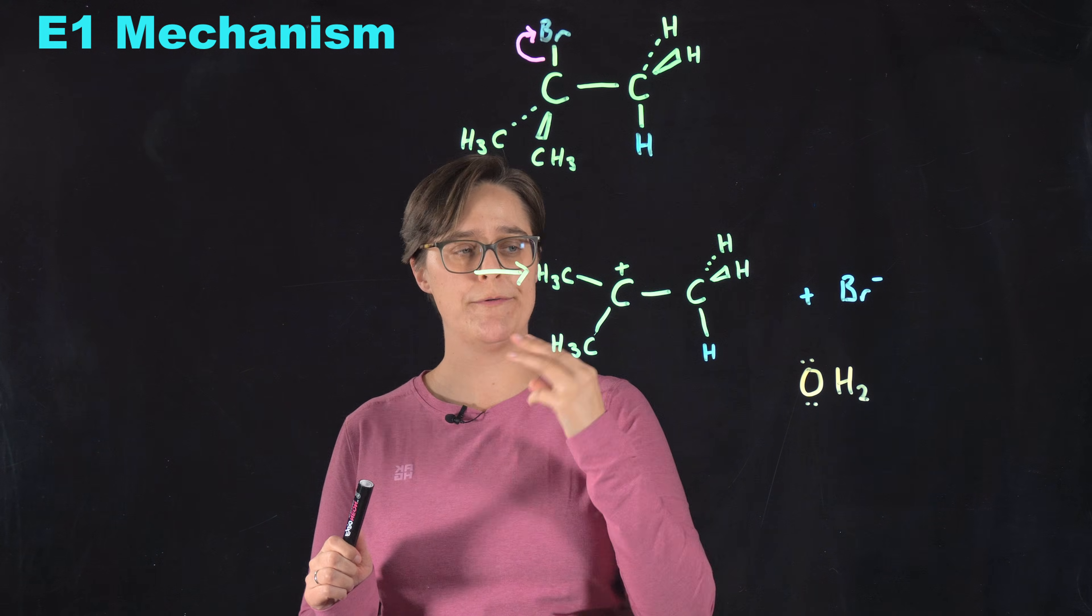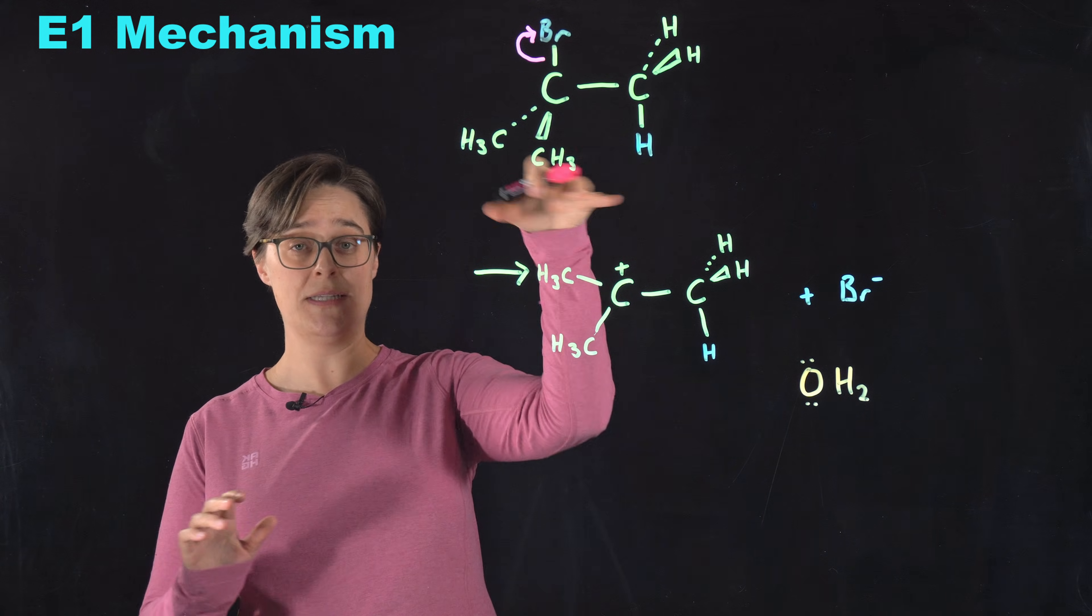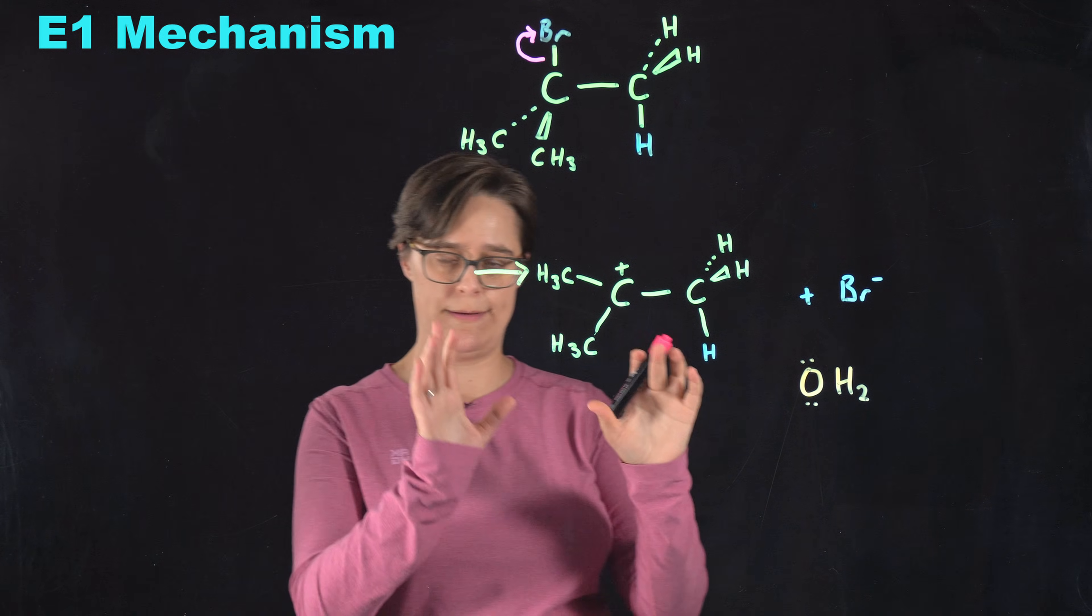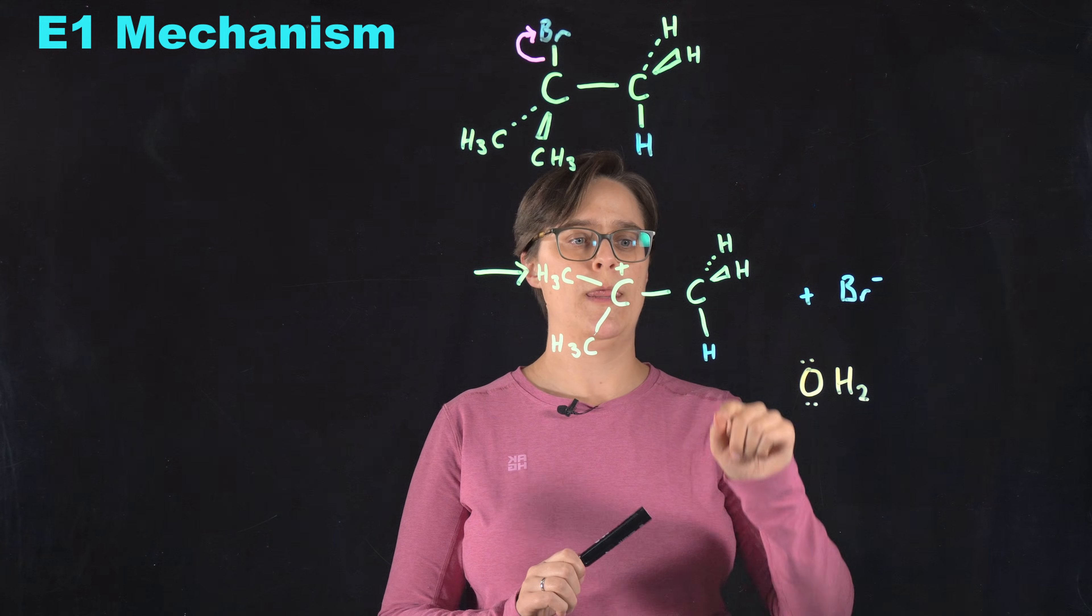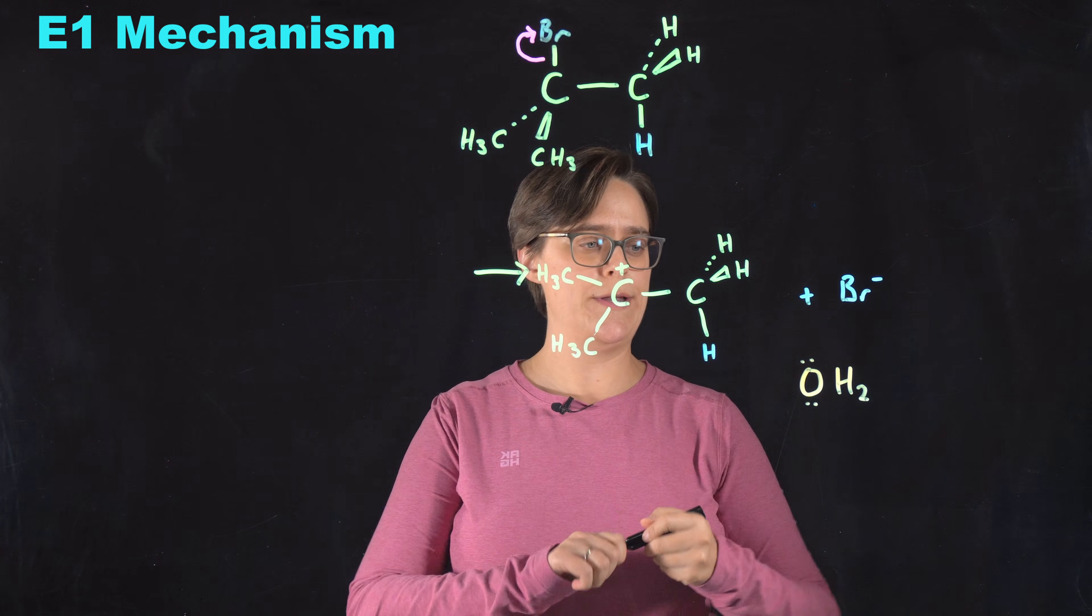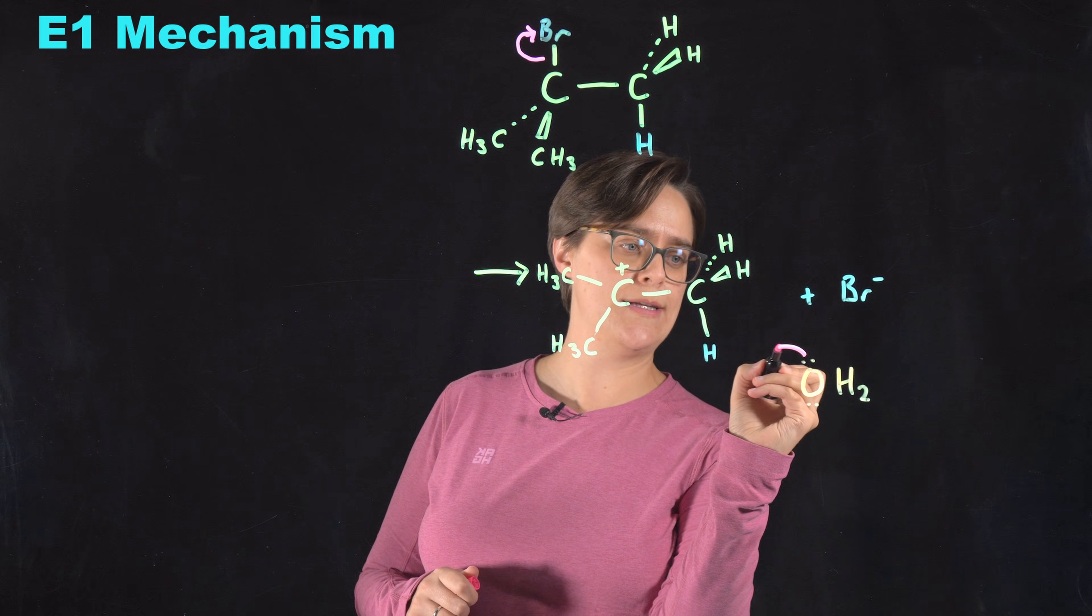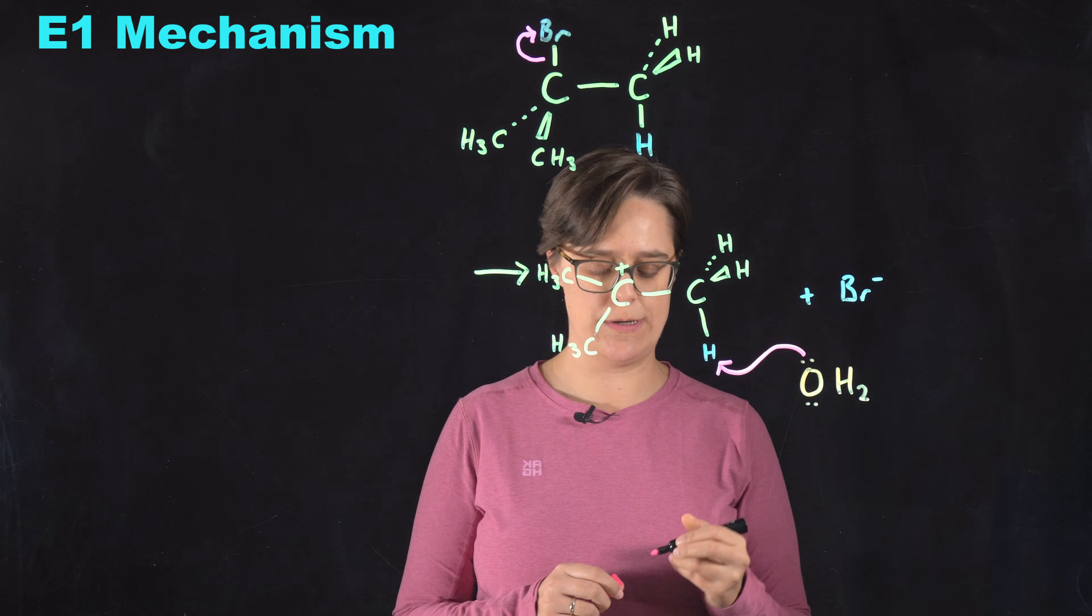So one, two, three. We have three of them here. This is a symmetrical molecule, so it doesn't really matter which one you pick. That's why it's an easy example. But I am going to have a lone pair of electrons attack this proton.